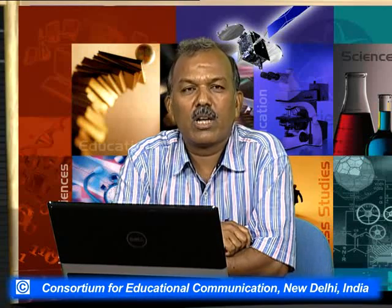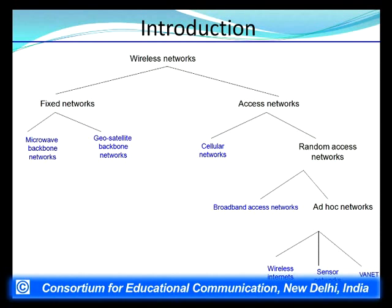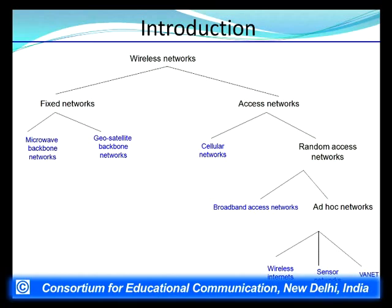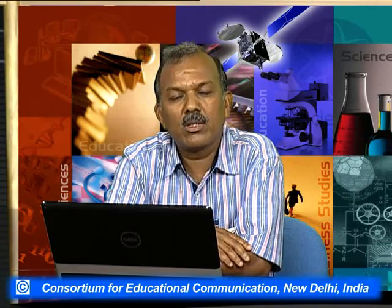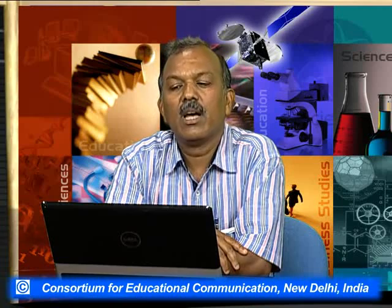Before giving a brief introduction of wireless sensor networks, let me cover the various kinds of wireless networks available. Generally, we use wired networks and only limitedly use wireless networks, though now we have wireless local networks. The various categories include fixed wireless networks, where microwave serves as a backbone — for example, your wireless department communicates via microwave links that are fixed at a place and do not change their positions.